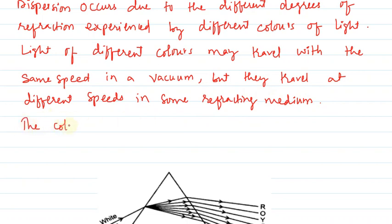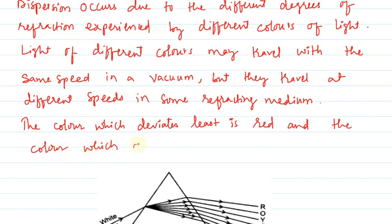The color which deviates least is red, and the color which deviates most is violet.